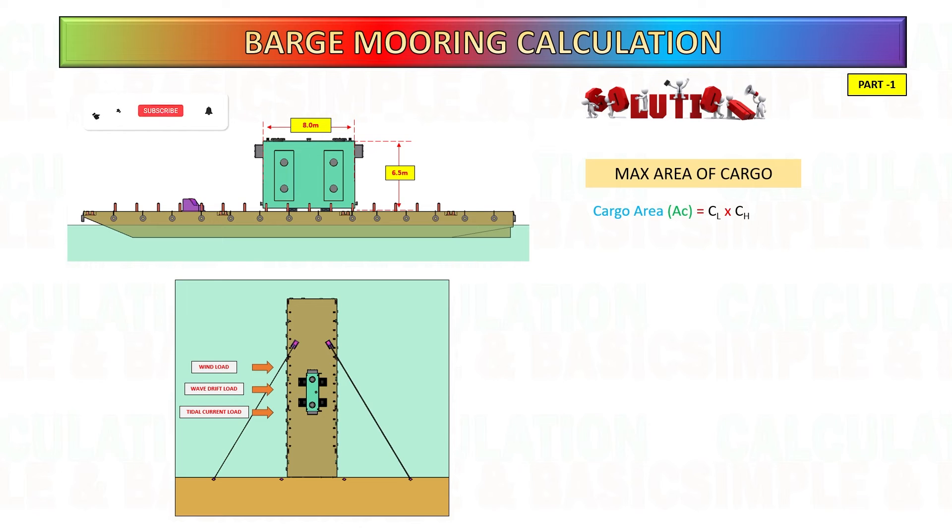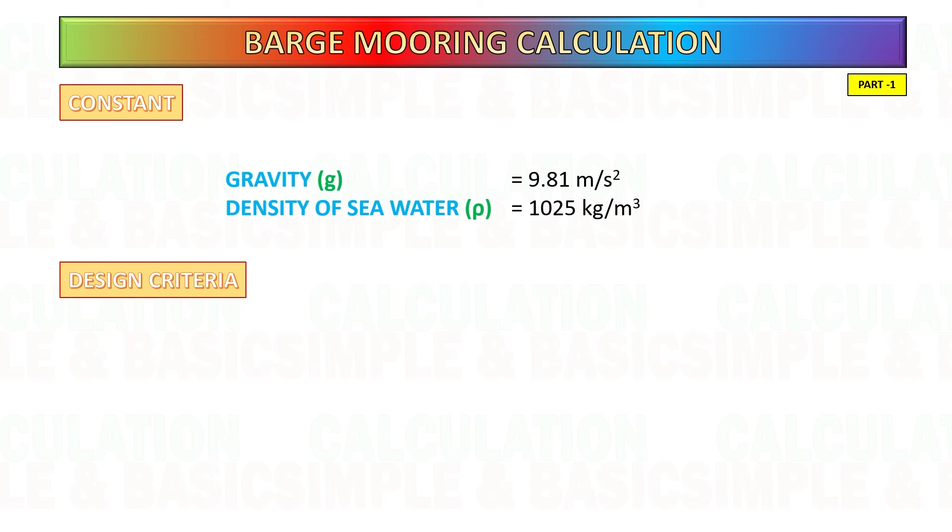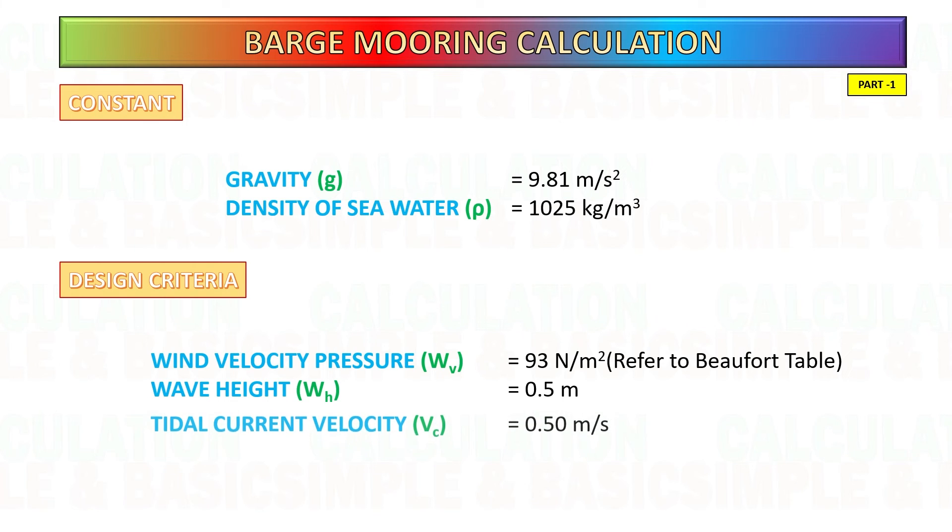I separate this calculation into two videos. For our calculation, this is the design criteria we consider: wind velocity pressure is 93 newton per meter squared, wave height is 0.5 meter, and tidal current velocity is 0.5 meter per second.